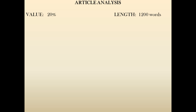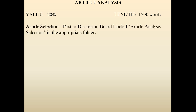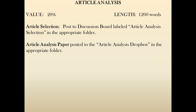Hello everyone, and welcome to this mini-lecture on the article analysis. These are the guidelines clarifying what you need to do for this assignment. The article analysis is 20% of your final grade, and it is a 1,200-word essay. There are two parts: the first is the article selection, where you find an article and post it to the discussion board in ANGEL. The second is the article analysis paper itself, which you post to a Dropbox.